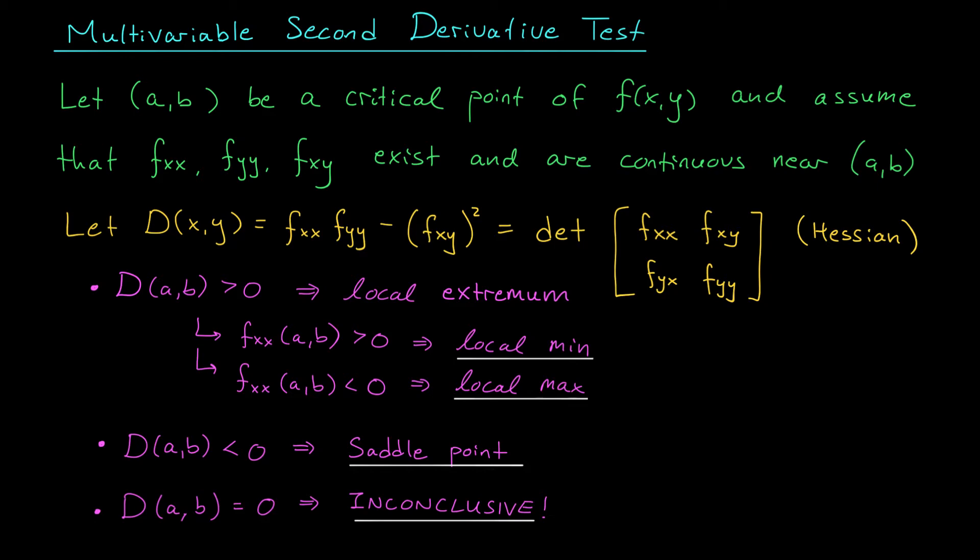But for now, let me give you a bit of justification for this first bullet point. So, let's assume for a moment that d(a,b) is positive. That is, fxx fyy minus fxy squared is greater than zero.